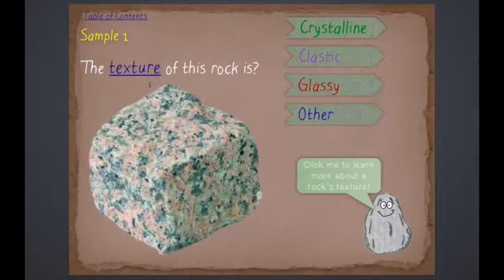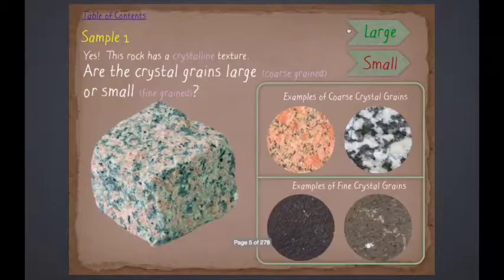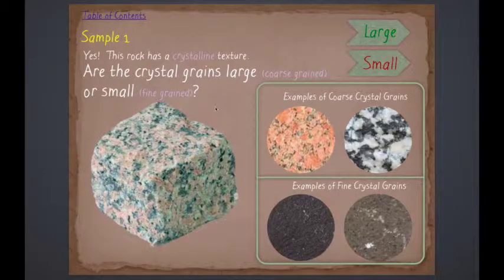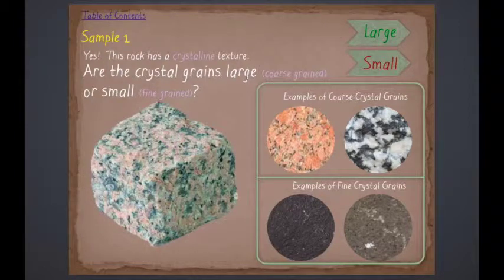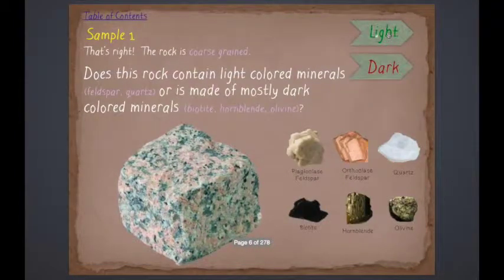So now I could go back to texture and re-read, but I know that it's crystalline, so let's click on crystalline for the texture. Yes, the rock has a crystalline texture, and now I want to find out about its crystal grain size. So I'm going to select large, and it is large, it's a coarse grain rock.